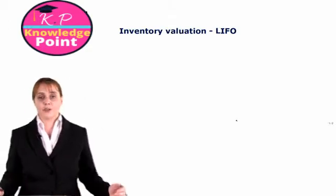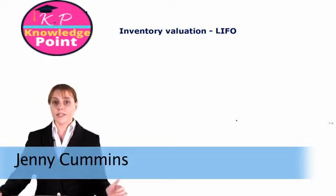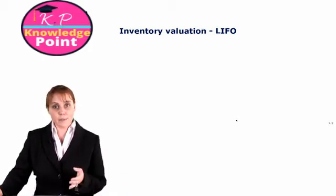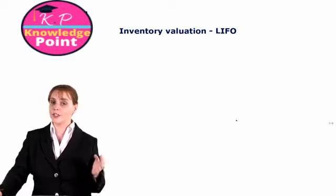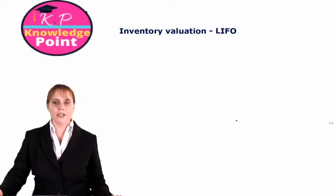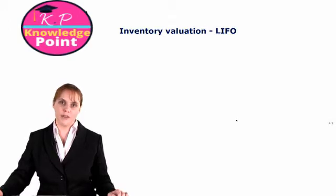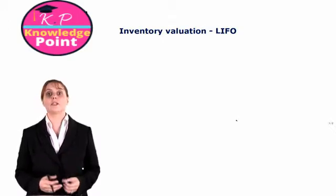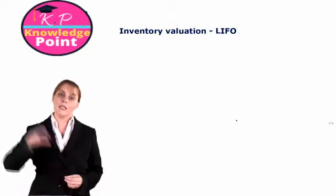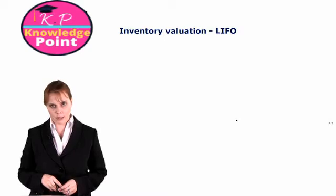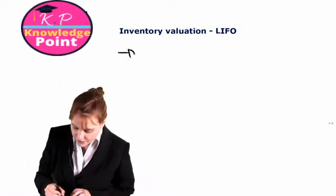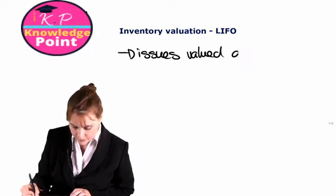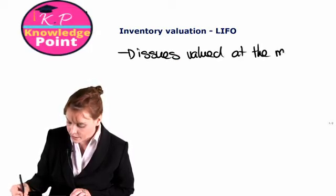The next inventory valuation method we are going to look at is the LIFO method — last in, first out. Under this method, when we are issuing inventory to production, we issue it at the most recent available price. In other words, we take the units which we purchased most recently and give them to the production department. Under LIFO, issues are valued at the most recent available price.